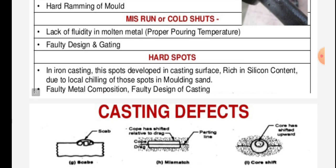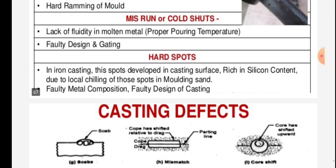Hard spots occur in iron castings. These hard parts develop on the casting surface and are rich in silicon content due to local chilling of those parts in the molding sand. Causes include faulty metal composition and faulty design of the casting.